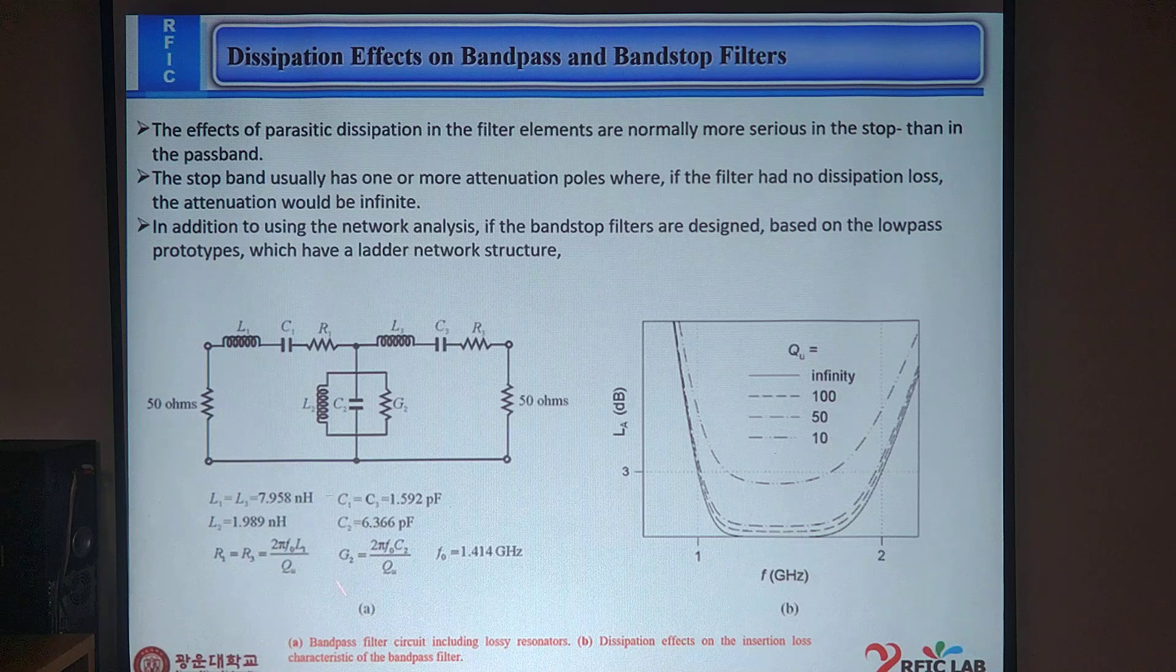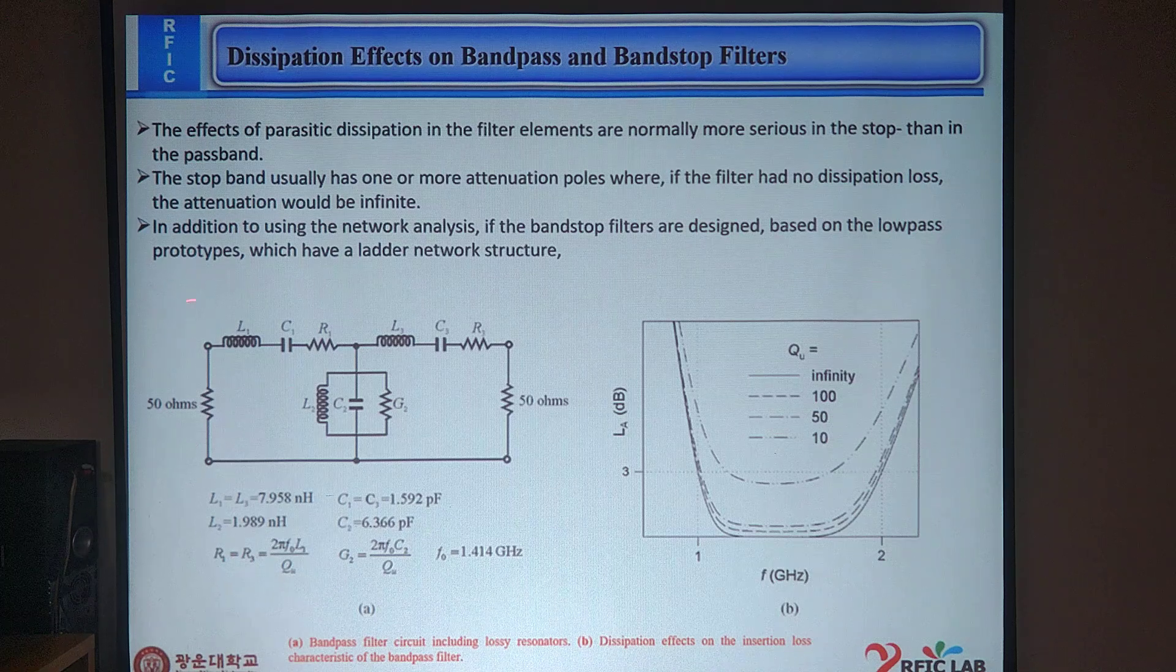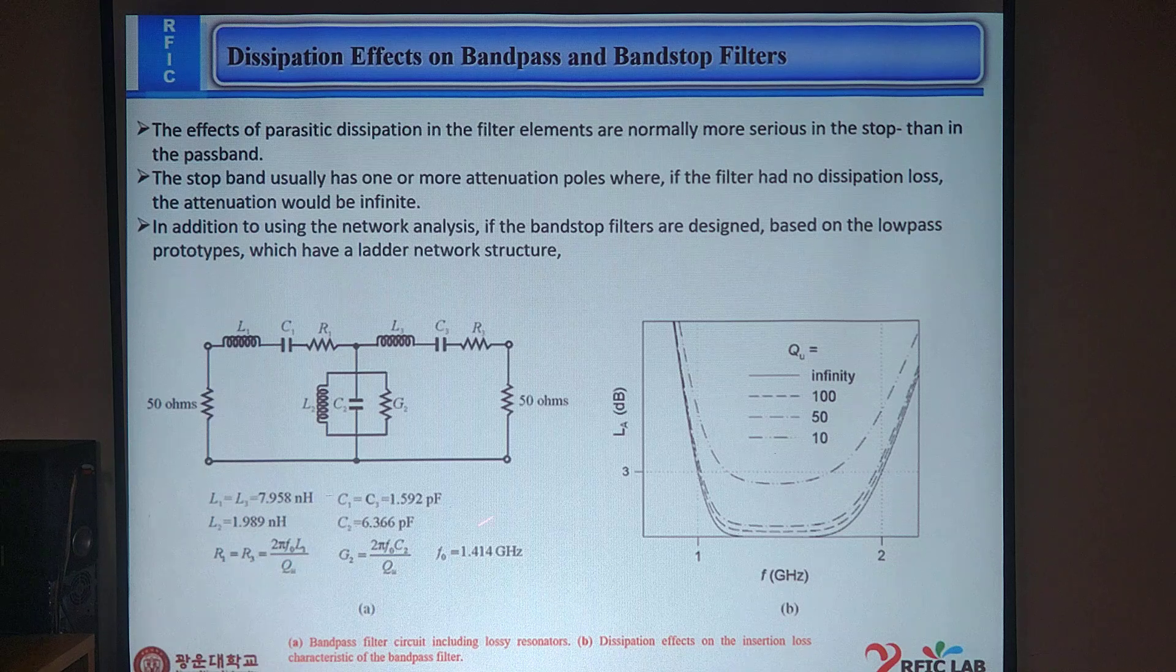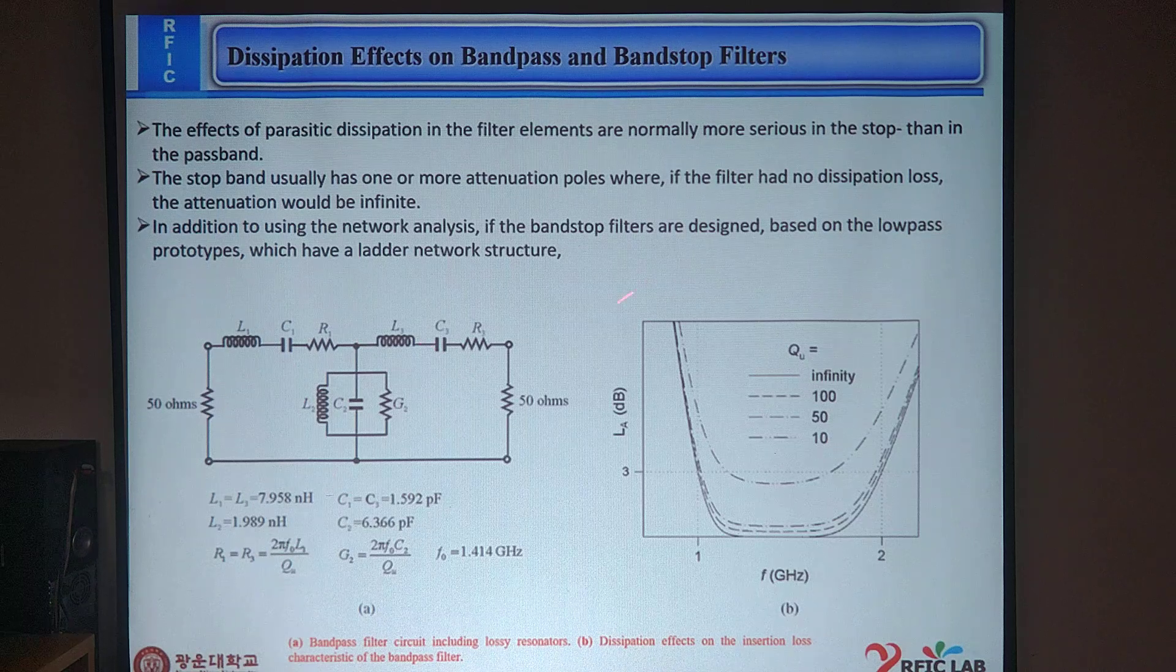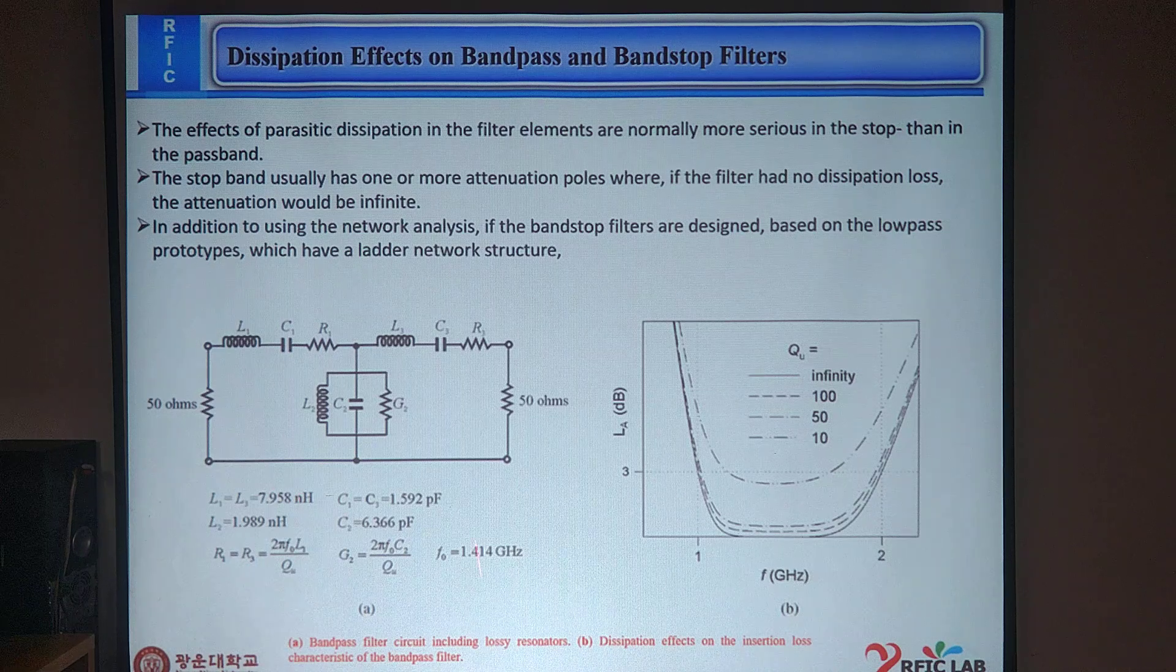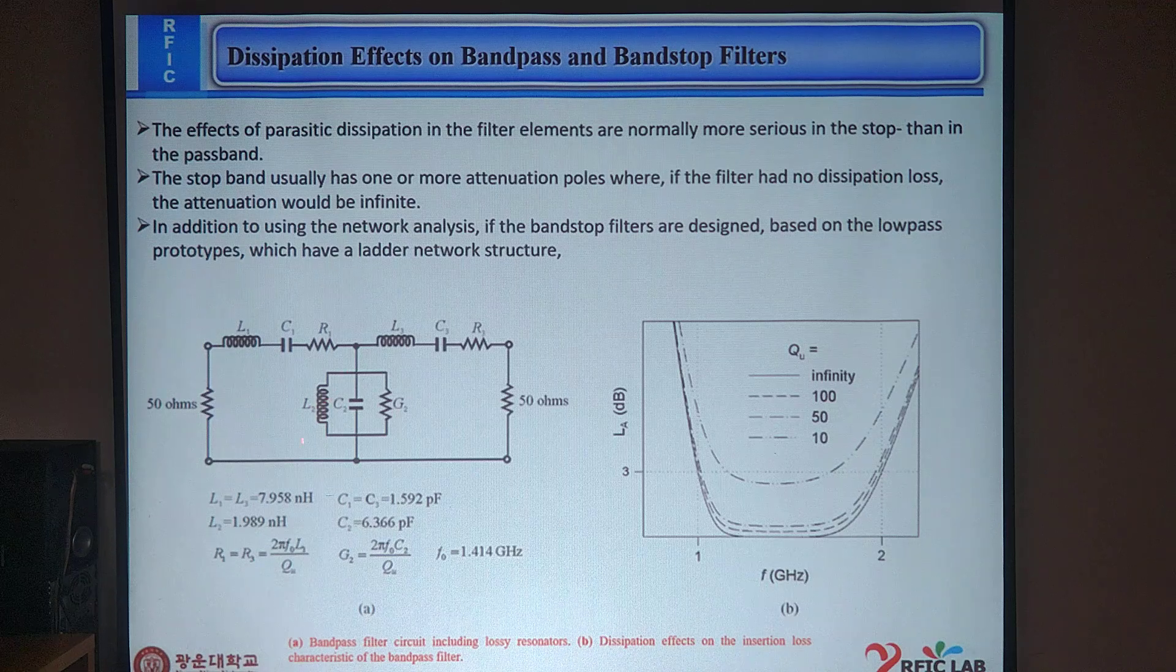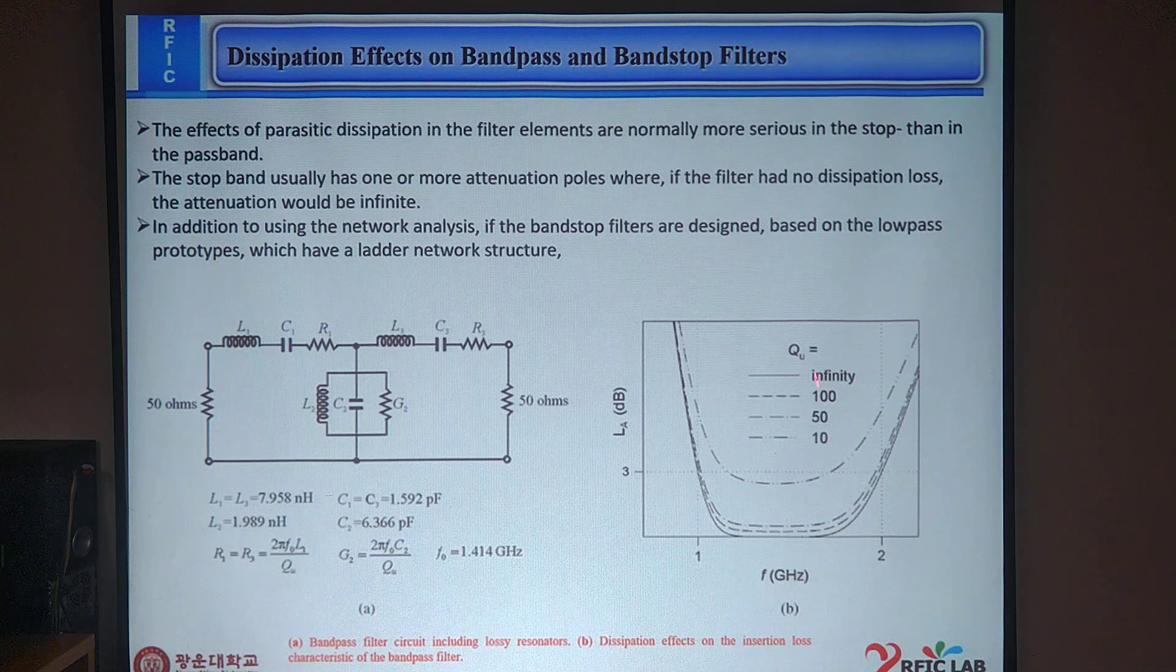The effect of parasitic dissipation in the filter elements are normally more serious in the stopband than in the passband. The stopband usually has one or two attenuation poles where, if the filter has no dissipation loss, the insertion would be infinite. In addition to using this network analysis, if the bandpass filters are designed based on the low-pass prototype which have the ladder structure network. Here we can see this is a bandpass filter circuit including lossy resonators. Here this capacitance, inductance and resistance. This is dissipation effect on the insertion loss characteristics of the bandpass filter.